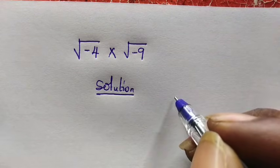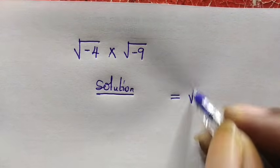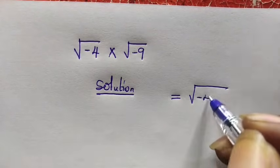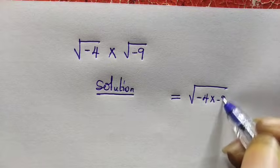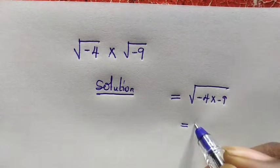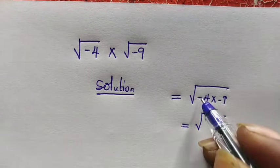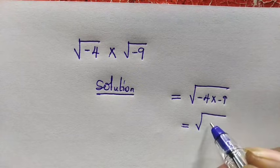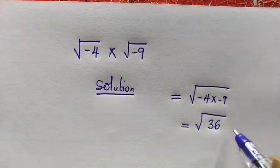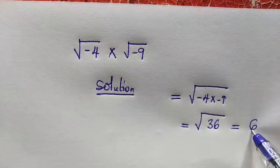That is, this is simply going to be equal to the square root of negative 4 times negative 9, which is going to be equal to the square root of minus times minus is positive, then 4 times 9 giving us 36, and the answer will be 6.